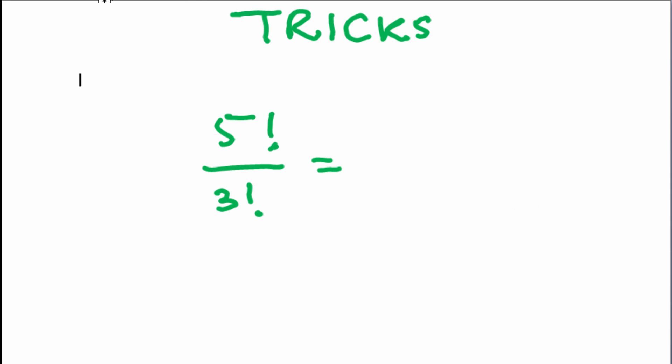Now, instead of writing all that, we can simply write 5×4, which is equal to 20. So we have taken out 3 factorial out of 5 factorial.